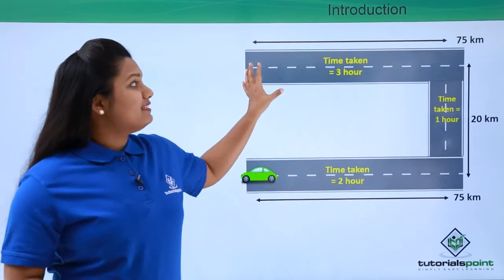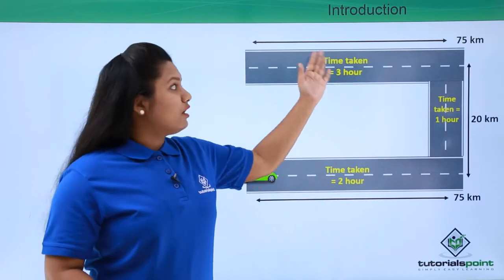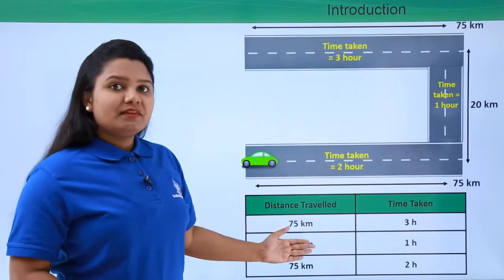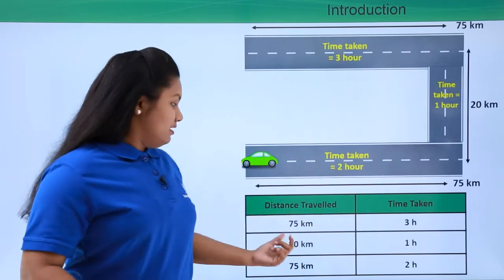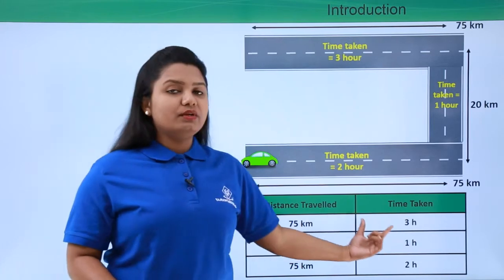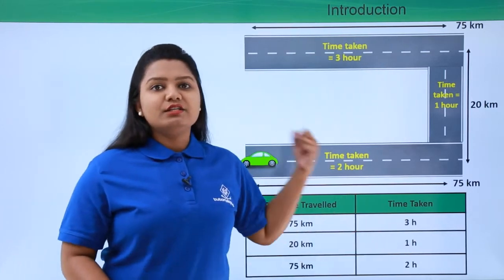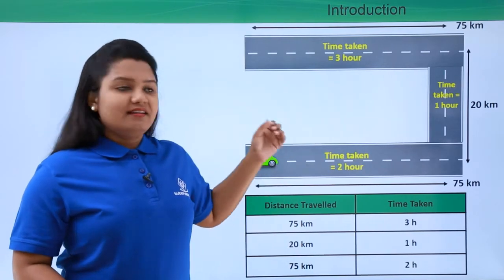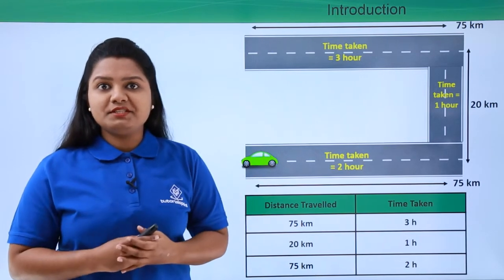Now here we can see that the car has taken different intervals of time to cover different distances, which can be represented by this table. The first 75 kilometers the car has taken three hours to cover, the next 20 kilometers it has taken only one hour, and the next 75 kilometers it has taken two hours to cover. Now in this scenario, can you tell me what is the speed of this object? What can we tell as the speed of the object?